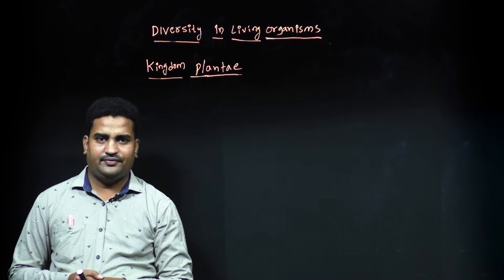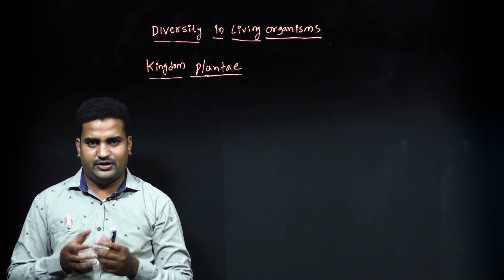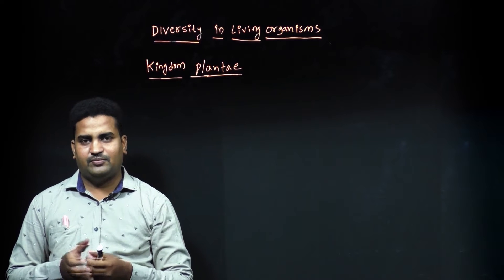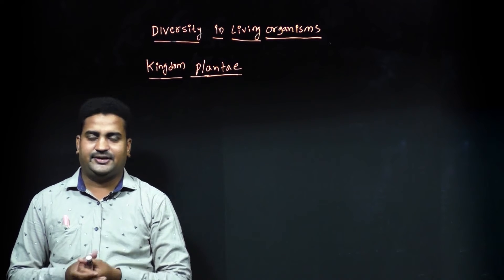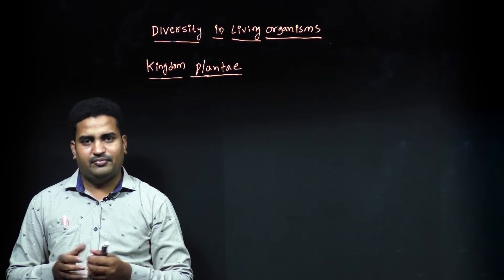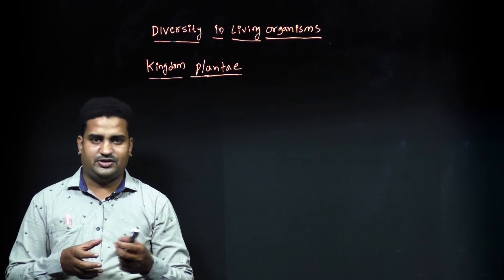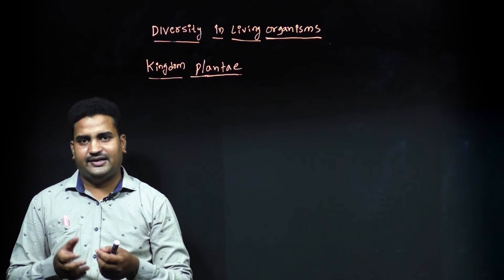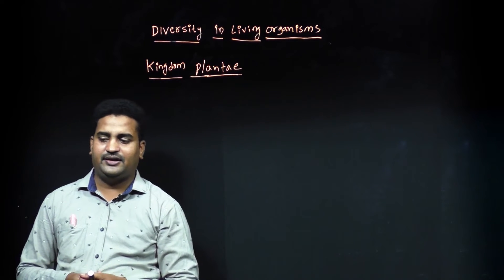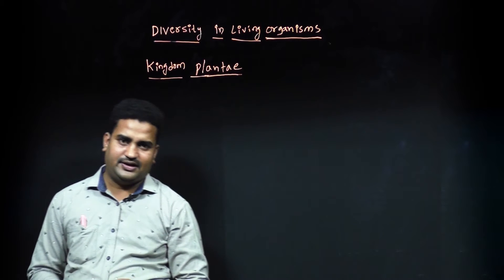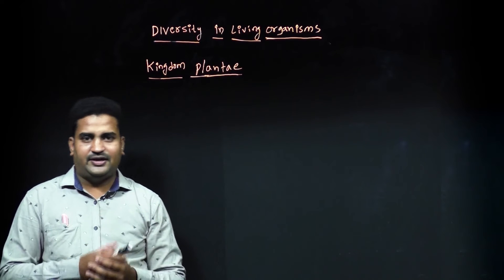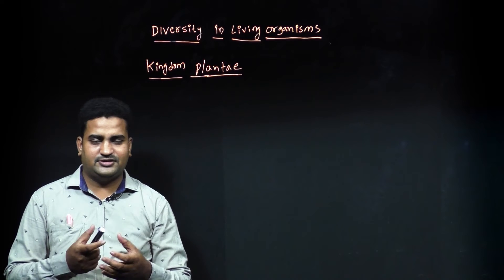Hello students. In this session we are going to discuss Kingdom Plantae. Kingdom Plantae includes all eukaryotic autotrophic organisms that are able to make their own food through the photosynthesis process. Primarily they contain cellulosic cell wall structure and they also contain all the important cell organelles as a eukaryotic cell contains.